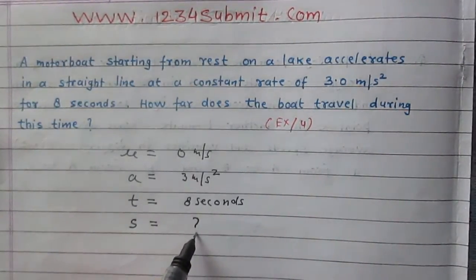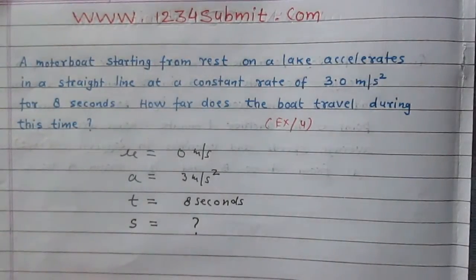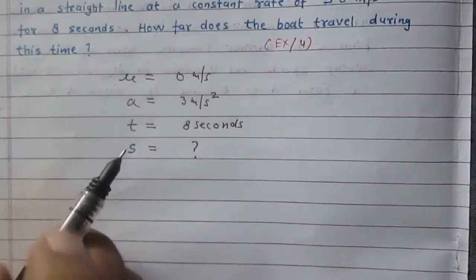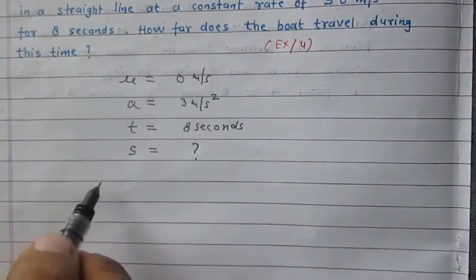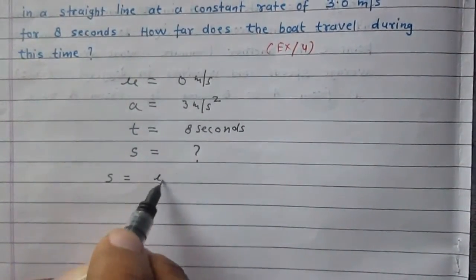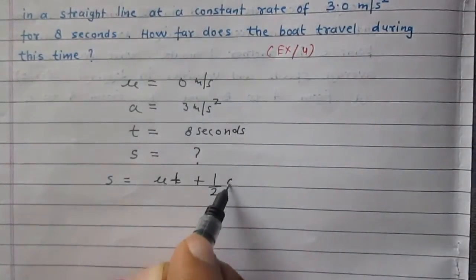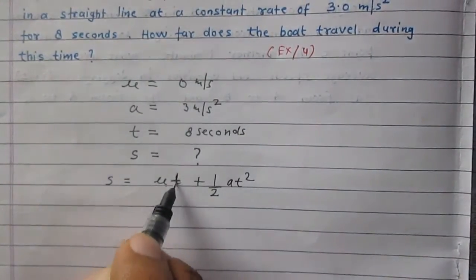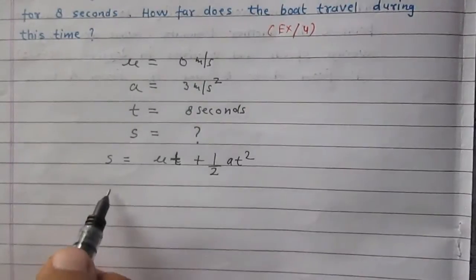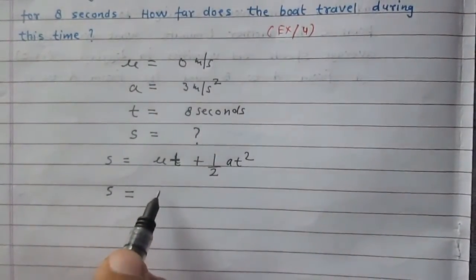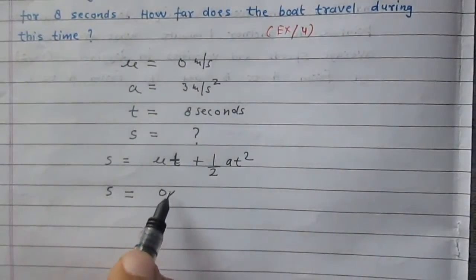By looking at the variables we can use the equation s equals ut plus half a t square. S we are to find, u the initial velocity is 0, time taken is 8, acceleration is 3.